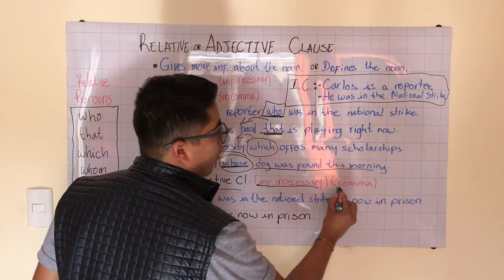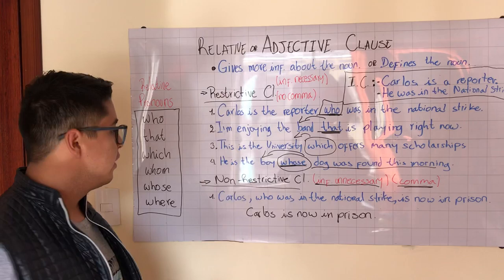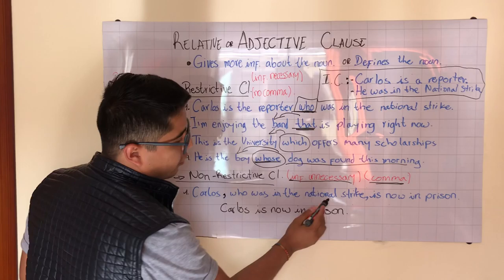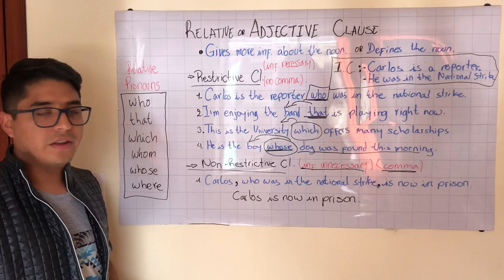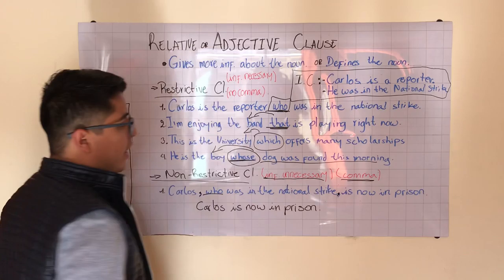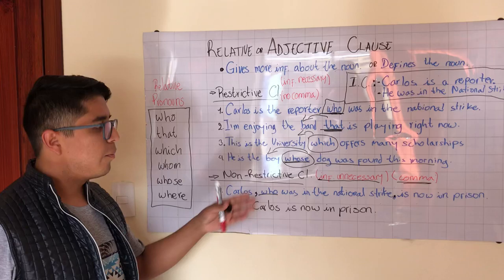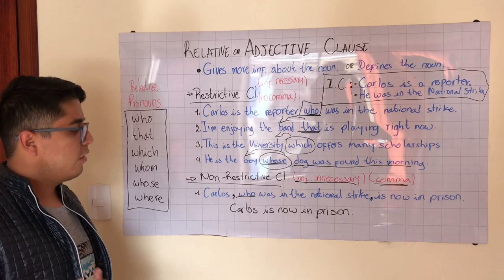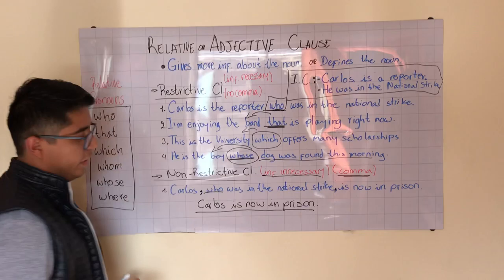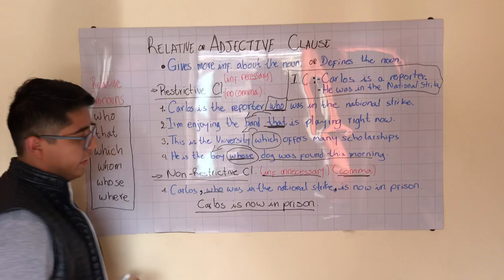Non-restrictive clauses add extra, unnecessary information about the noun, and this extra information is placed between commas. For example: 'Carlos, who was in the national strike, is now in prison.' The clause 'who was in the national strike' is extra information that can be omitted. Without it, 'Carlos is now in prison' still makes complete sense.